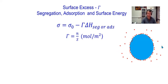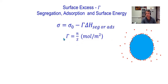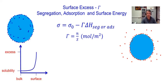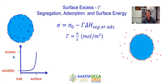In the gas phase, we have the pressure of gas, and next to the surface we have an adsorption layer. This adsorption layer determines the surface excess, and then you have a decrease of surface energy. It's the same case for segregation. When we have a solid solution, in the bulk we have the solubility, but next to the surface we have an increase of concentration. This increase of concentration is the surface excess.